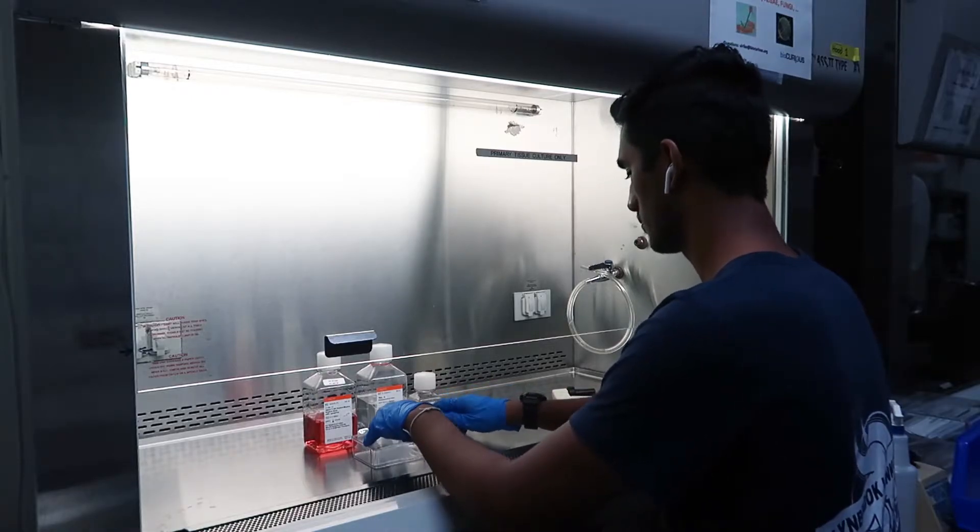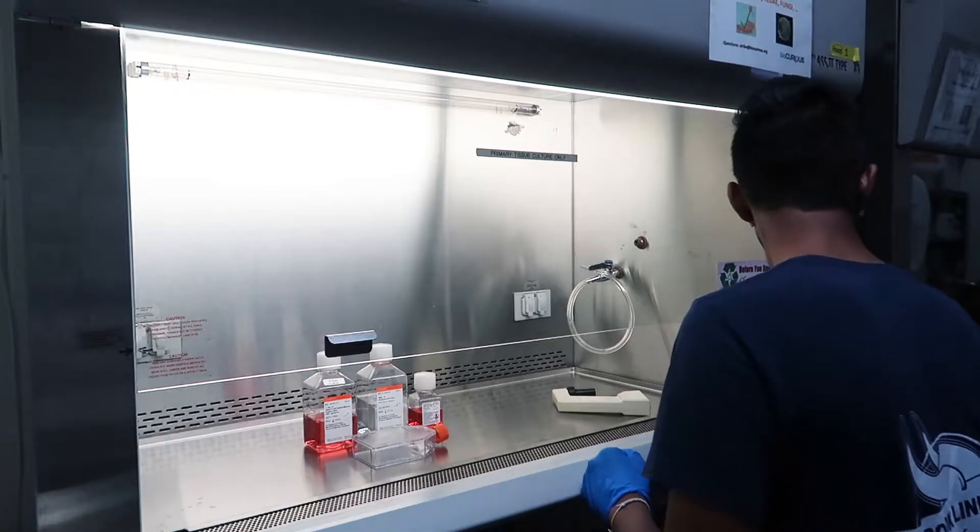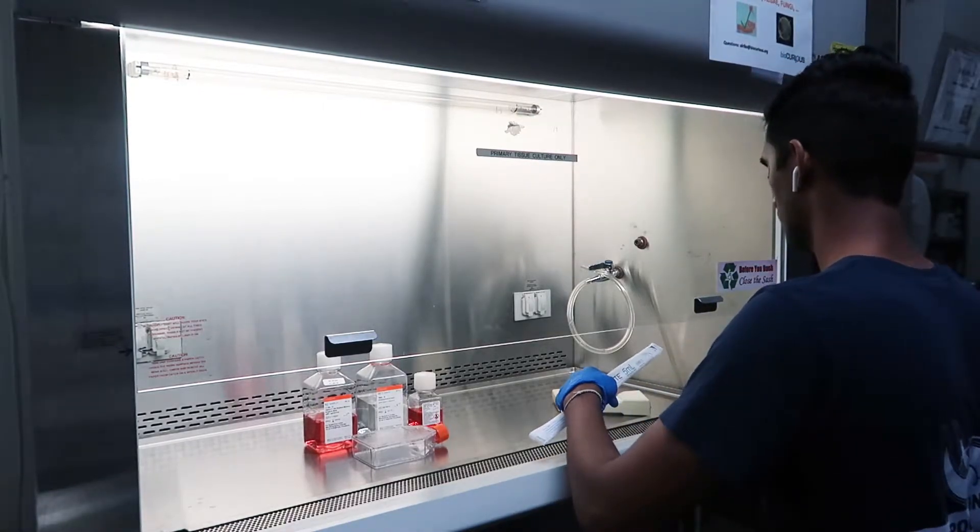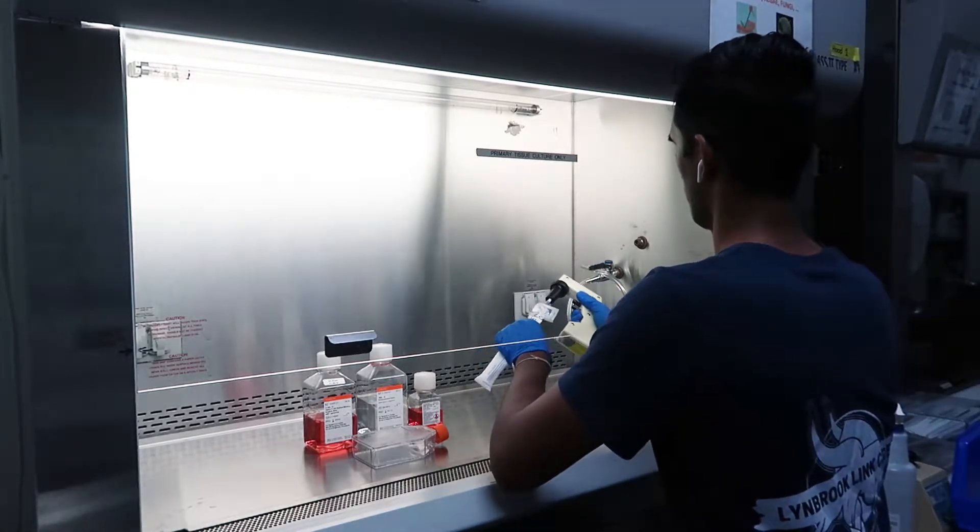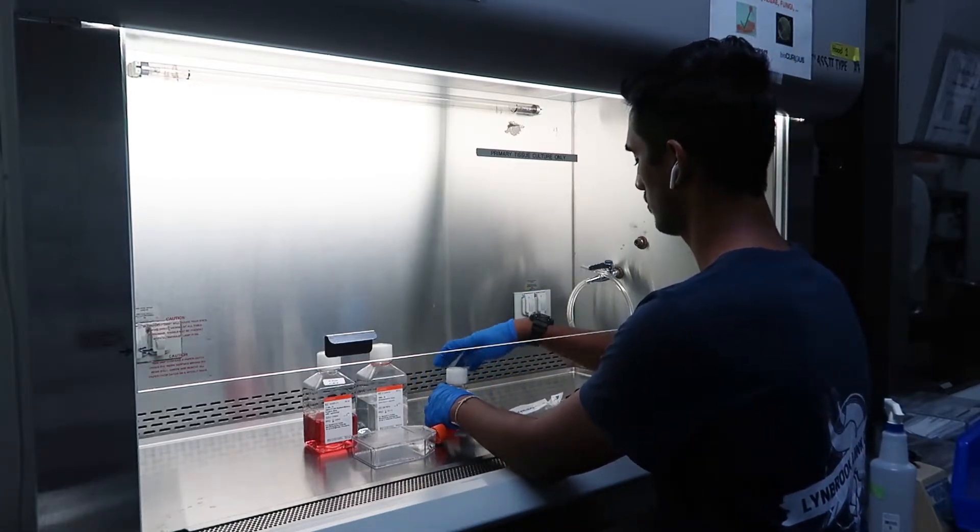The next step is to disassociate these cells from the bottom of your flask and this is going to be done using trypsin EDTA. So in this step, we're going to be using once again, a serological pipette and a serological pipette pump to add three milliliters of trypsin EDTA to the cells directly.